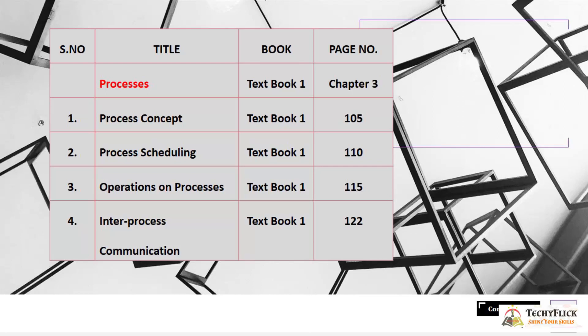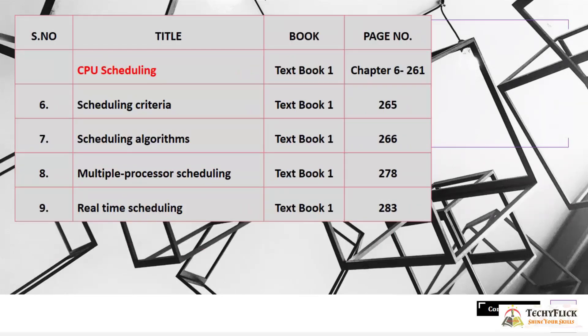Chapter 3 covers different subtopics with specific page numbers: Process Concept is page 105, Scheduling is page 110, Operations on Processes is page 115, and Inter-process Communication (IPC) is page 122.